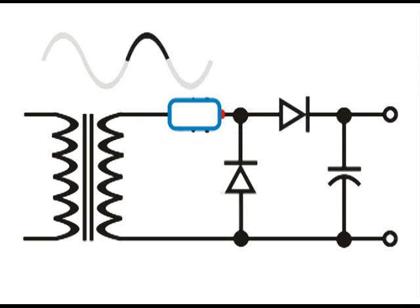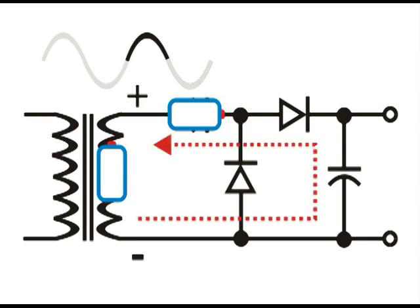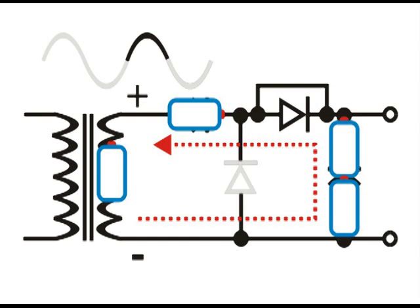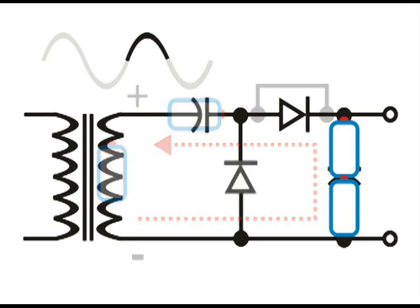Now when we get to the next following positive peak, current is going to flow in this direction, forward biasing the top diode. And current is going to flow in this direction. And with the energy from the coil plus the voltage that we just charged in the top capacitor, those two potentials are going to charge the rightmost capacitor to double the voltage.